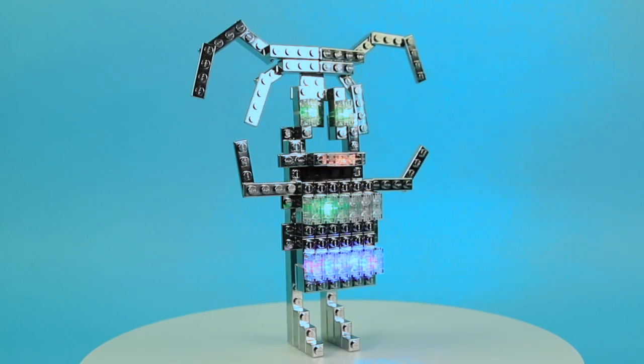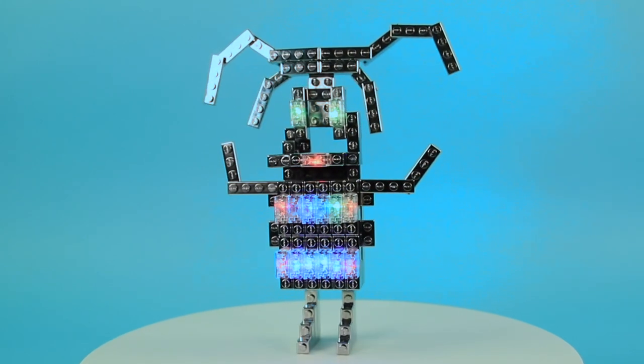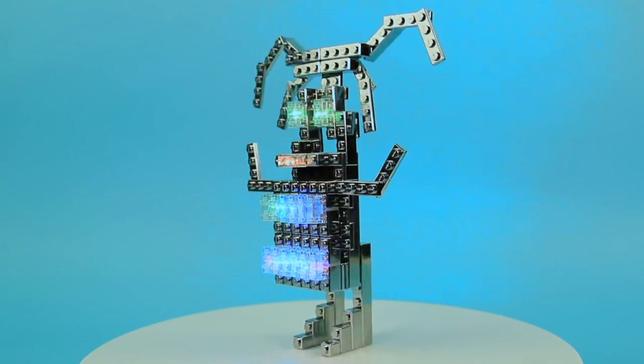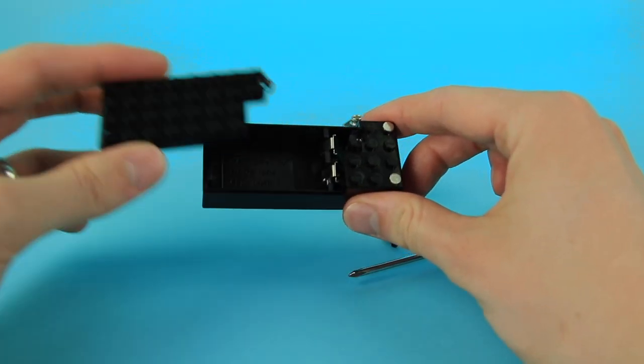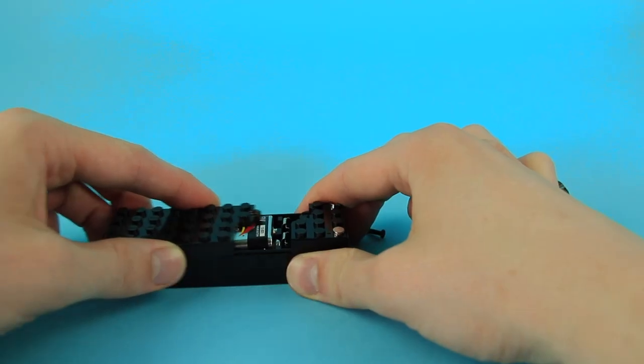This video will show you how to build a girl with a light-up dress and eyes using E-Blocks Power Blocks. Before you begin building, remember to put a 9-volt battery inside your battery box.